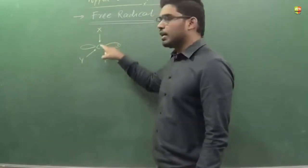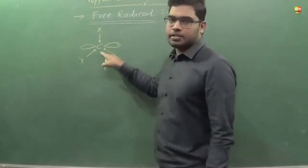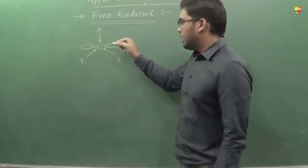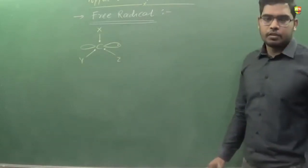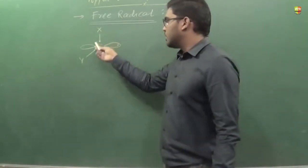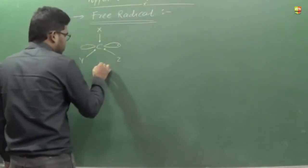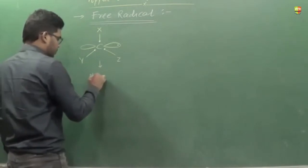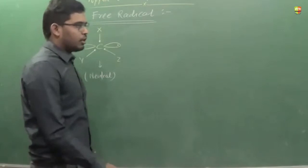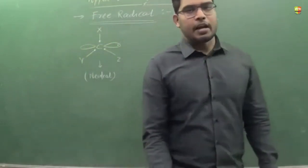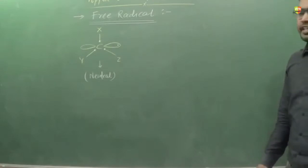So the carbon atom has all its electrons present with it. It has no extra electron, and it did not lose its electron to another molecule. All four electrons of carbon are there with the carbon itself, and that's why this is neutral in nature. All the electrons are present with the carbon atom and it is neutral in nature.